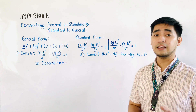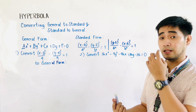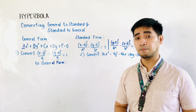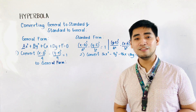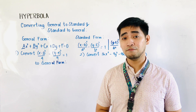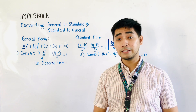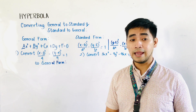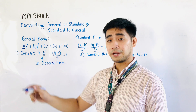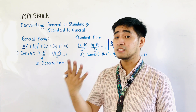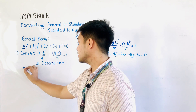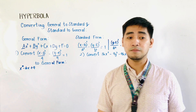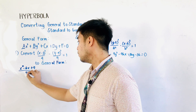We're asked to convert the standard form into the general form. The first thing we need to do is expand the numerators. We expand (x−3)² to get x² − 6x + 9, so the first term becomes (x² − 6x + 9)/4.